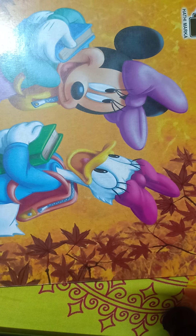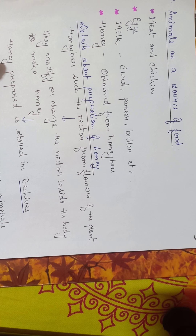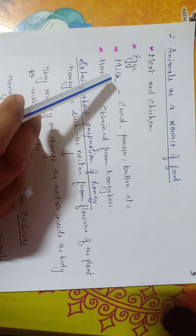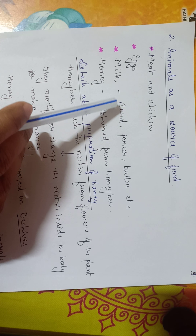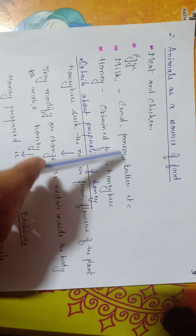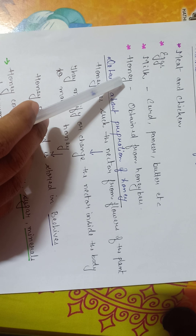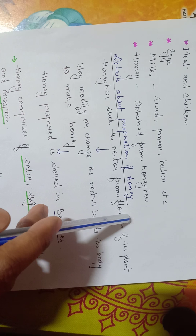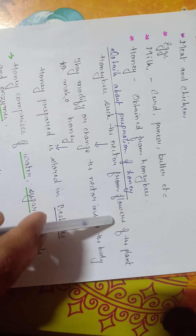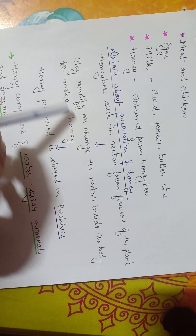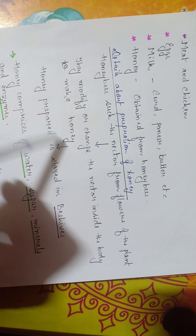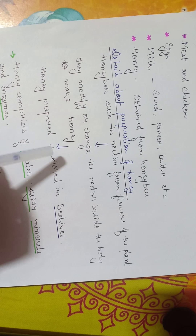Now coming to animals as a source of food. From animals also, we get different varieties of food such as meat and chicken, eggs, and milk. From milk, we get different milk products like curd, paneer, butter, etc. And next is honey, which is obtained from honeybees. Honeybees suck the nectar from the flowers of the plant. Then they modify or change the nectar inside their body to make honey. This honey is stored in a beehive. In this way, honey is prepared.